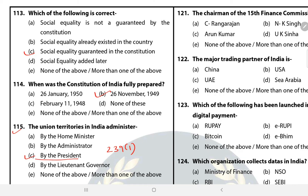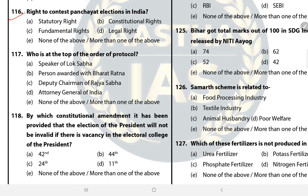Question 116: Right to contest Panchayat election in India is a constitutional right. Question 117: Who is at the top of the order of protocol? According to this, the Speaker of Lok Sabha is listed but the President is at the top of the protocol, followed by the Vice President, Prime Minister, and Deputy Prime Minister. Question 118: By which constitutional amendment has it been provided that the election of the President will not be invalid if there is a vacancy in the Electoral College? Answer — 11th Constitutional Amendment Act, 1961.